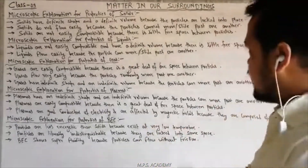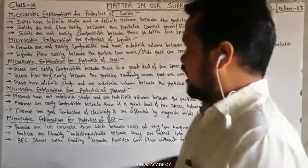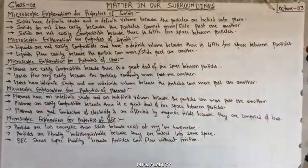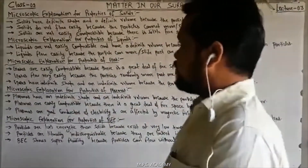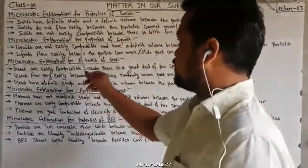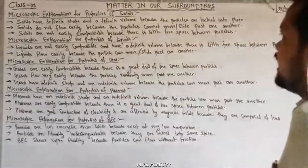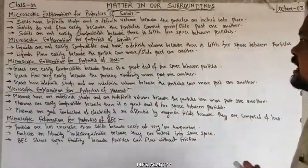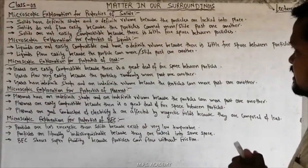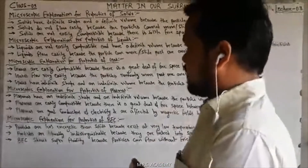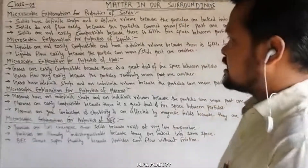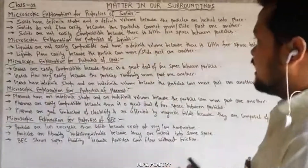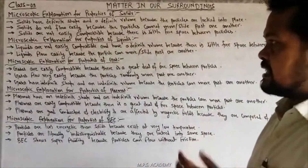Liquid के particles के बीच में attraction होता है, इसलिए उनका volume fixed होता है। Liquids flow easily because the particles can move slightly past one another. जो liquid है वो एक दूसरे के ऊपर easily move करते हैं, इसलिए liquid flow करते हैं।